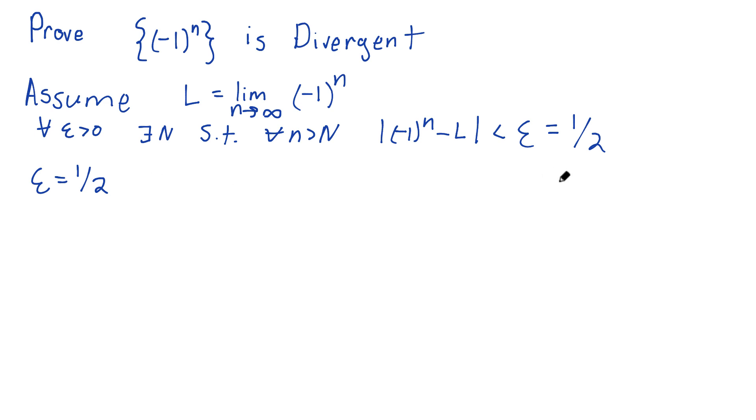Well, this is going to be true for every single little n after capital N. One of those little n's is going to be odd. What's negative 1 to an odd power? Well, it's negative 1. So negative 1 minus L has to be less than a half.